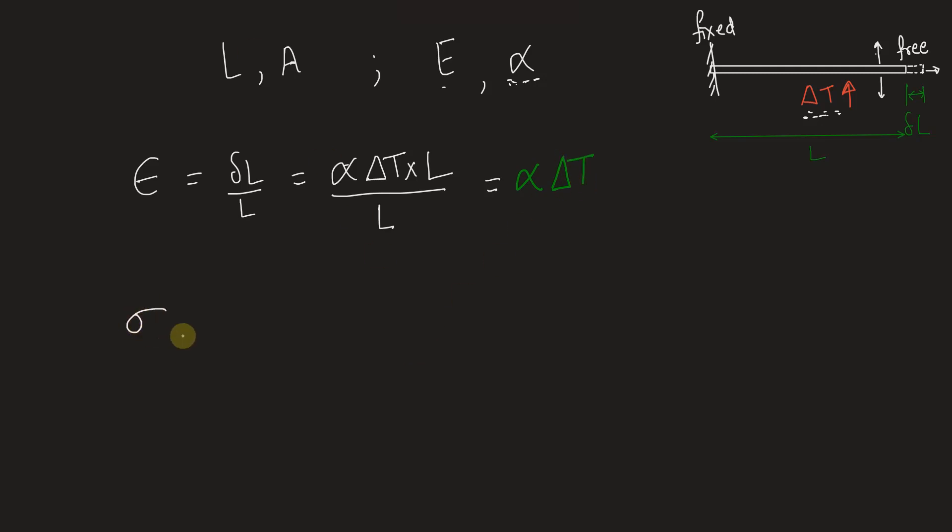Next thing, stress in the material. Stress is generated inside the material only if there are supports such that it restricts the movement or it restricts the expansion in this case. And here in this case we see that this end is free to expand. Although there is a fixed support on the left hand side, complete expansion happens from the right hand side. And that is why stress in the material will be zero. Because there is no resistance to the expansion.